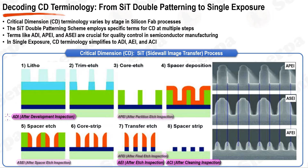After final etch inspection, AFEI, also known as after etch inspection, AEI, is the CD measurement taken after the final etching process, which shapes actual features on the wafer. After cleaning inspection, ACI, refers to CD measurement after ashing and strip processes, ensuring the cleaning has not adversely affected patterned feature dimensions. Understanding these terminologies and their corresponding fabrication stages is essential for precise communication and better process quality control. In single exposure schemes, terminology is generally simplified to primarily include ADI, AEI, and ACI due to the less complex nature of single exposure compared to multi-patterning techniques like SIT.